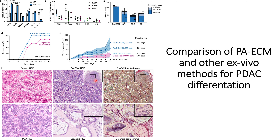In this video we will compare PAECM and other axio models for PDAC differentiation, and also check the cancer stem cell markers in these different axio models used for pancreatic cancer cell culture. In the previous video we found that stem cell markers are differently expressed in different axio models, and they are expressed more in the custom PAECM models that these researchers designed compared to the other axio models currently used for culturing pancreatic cancer cells.